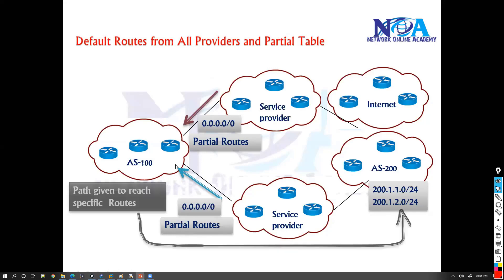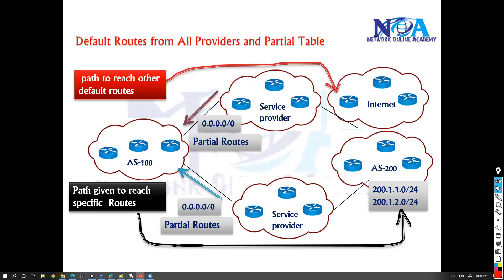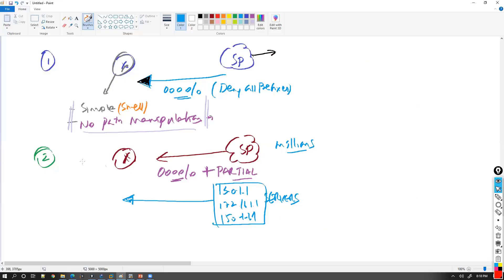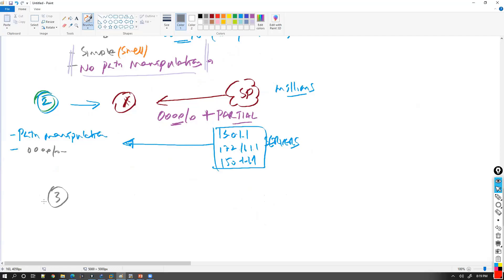With these partial routes, I can do path manipulation. For example, to reach those specific routes I can set my best route to go from service provider 2, while for the rest of the internet I go from service provider 1. This is what the second option enables — path manipulation is possible because we have some routes in the BGP table. I'm not maintaining all routes, only partial routes I want for route filtering. Most medium to large organizations prefer the second option for this reason.